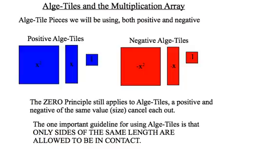So, algebra tiles in the multiplication array. We've developed the different shapes of the algebra tiles. There's an x squared, x, and a 1. They also have their negative counterparts.